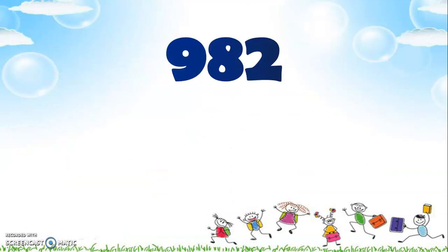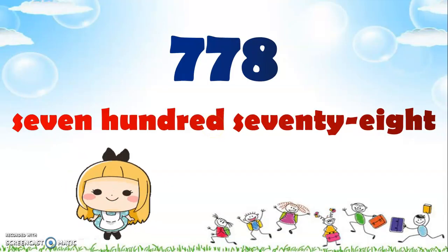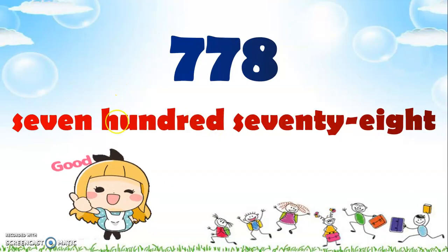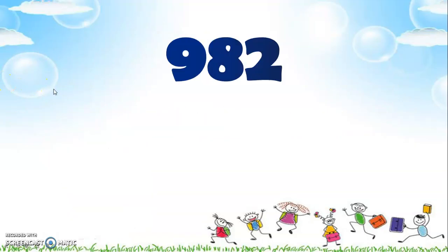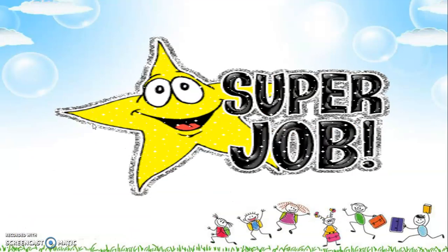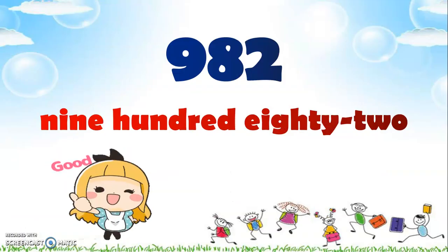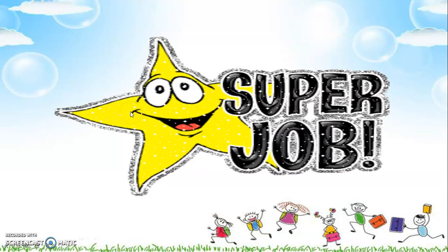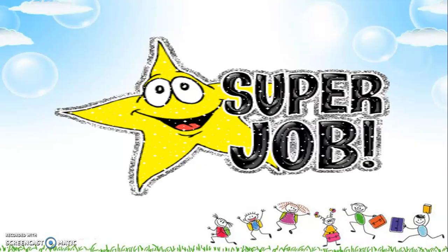And another one: 778. Look again at the number chart — the answer is seven hundred seventy-eight. And the last one: 982 — go back to the number chart. The answer is nine hundred eighty-two. Very good! Great job, Grade 2 — now you already know how to read and write numbers from zero to one thousand.